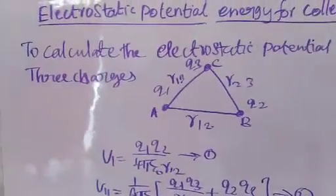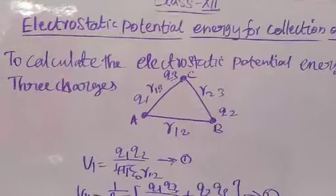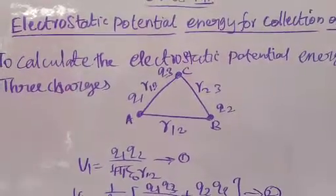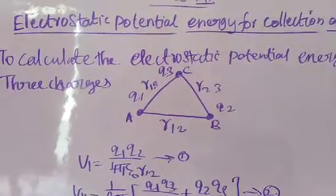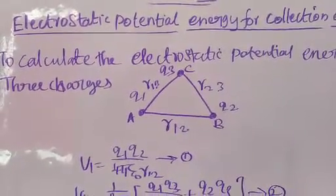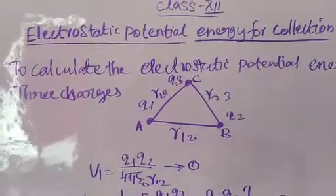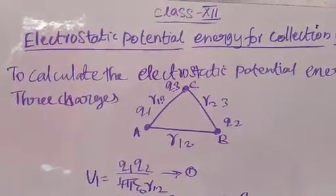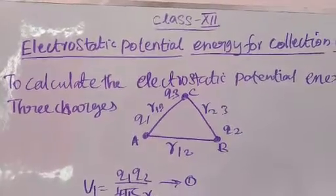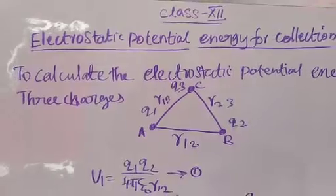Now, to calculate the electric potential energy for three charges, we bring the three charges Q1, Q2, and Q3 one by one to arrange the configuration. First, charge Q1 is brought from infinity to point A. No work is done, because initially no charge is present around point A, so there is no work done.